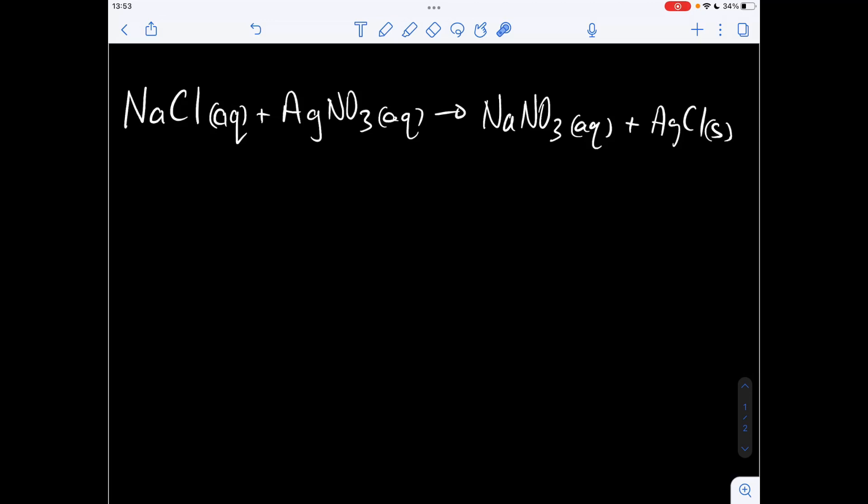So I'm going to use this reaction to illustrate. This is a reasonably simple one and then we'll look at a more complicated one to finish. We've got aqueous sodium chloride reacting with aqueous silver nitrate and that goes to make aqueous sodium nitrate and solid silver chloride.